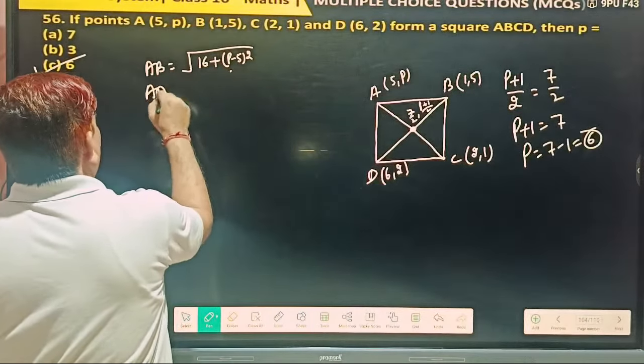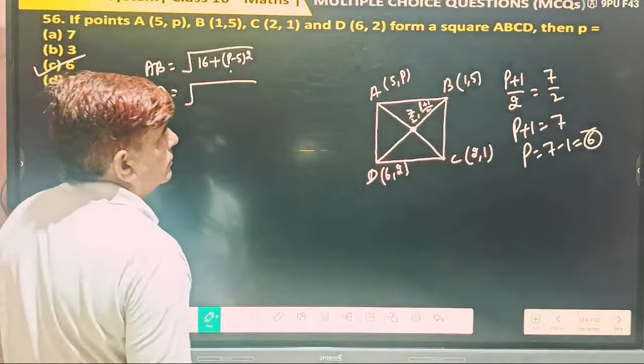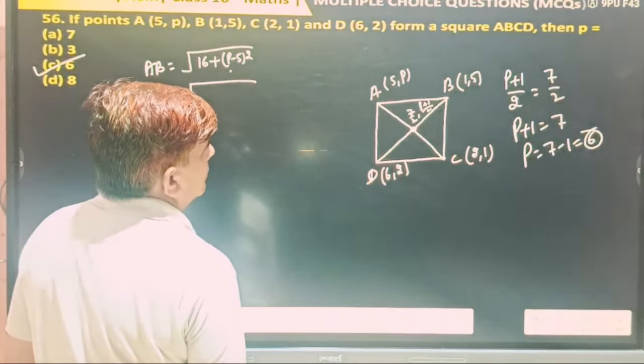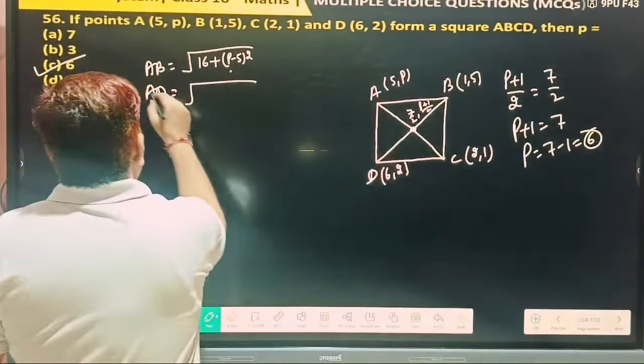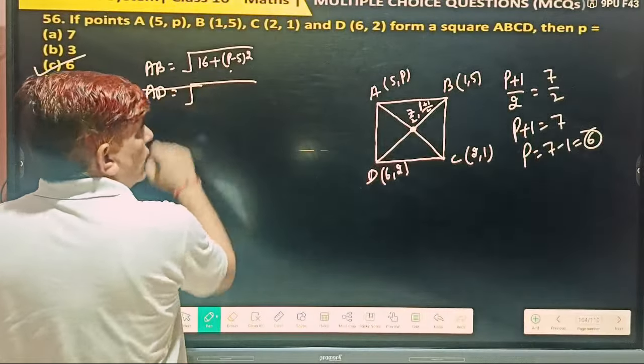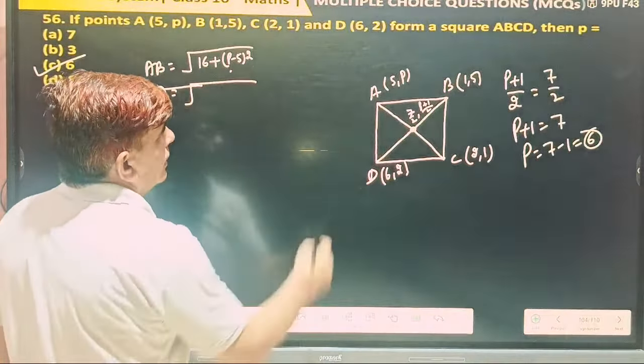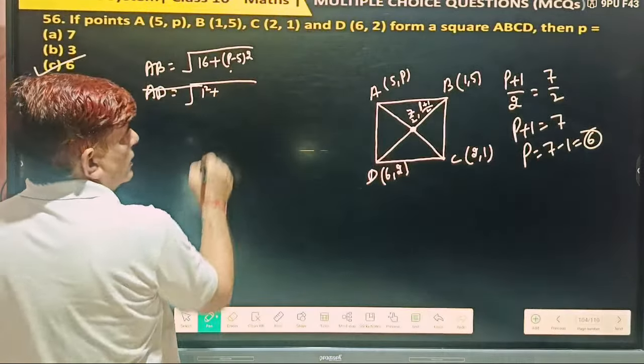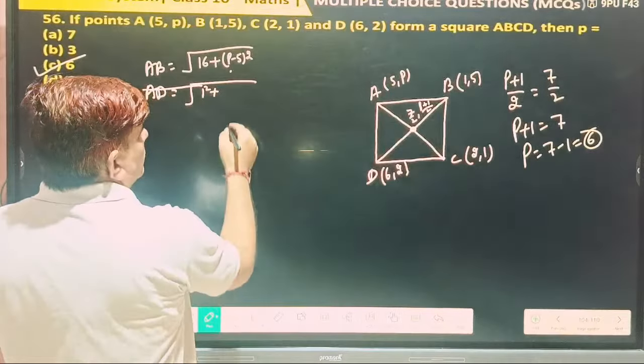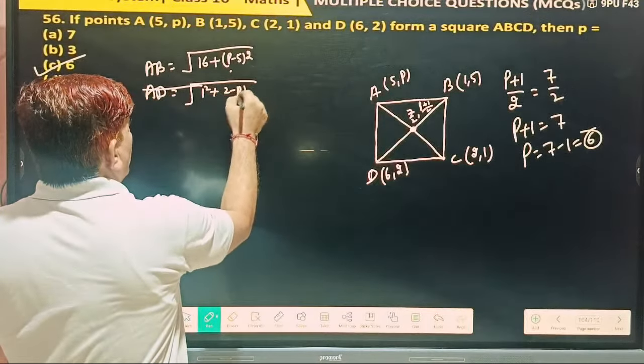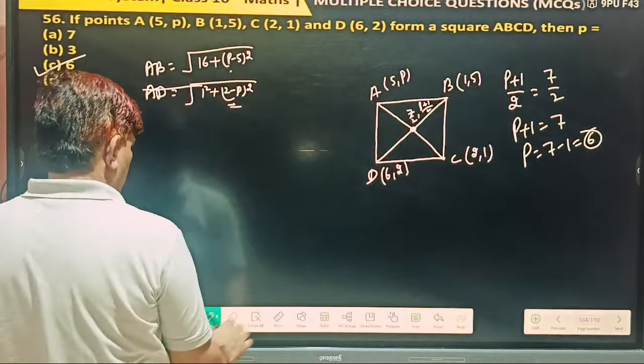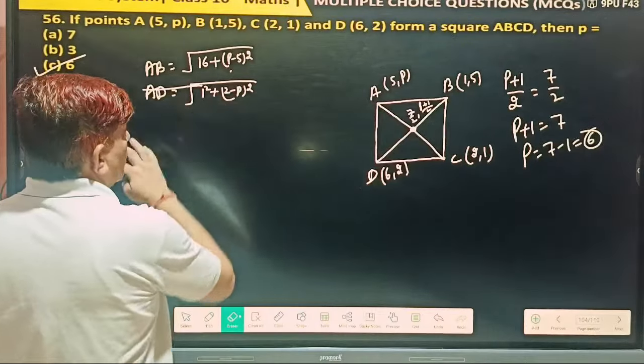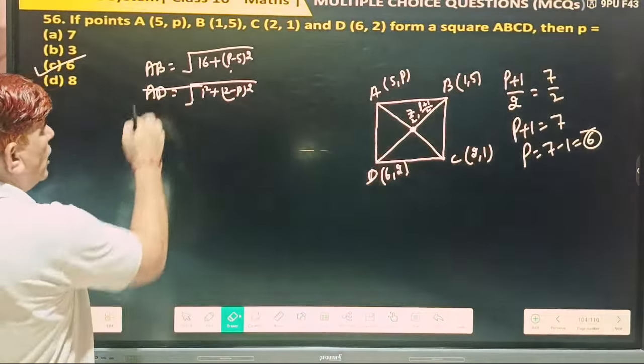Then find out AD. AD equal to what? AD not BC we can find out, or AD we can find out. Then also we can compare. AD. 6 minus 5, one square. Plus 2 minus P whole square. We can compare this like this or not. Yes. Both are equal.